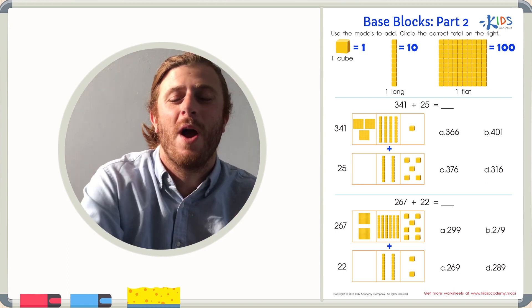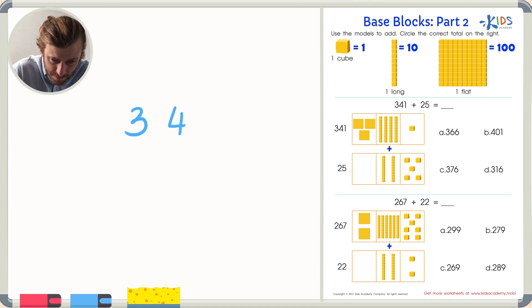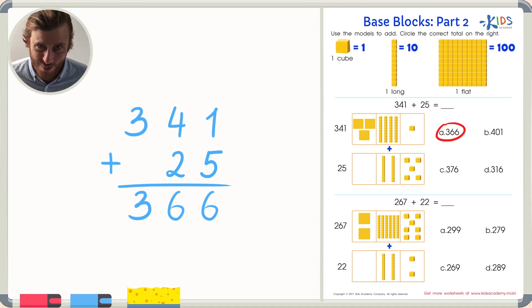We could check it even one more way if we want to just be safe. We can line our problem up vertically the way it's written and add place by place. This is called the standard algorithm. And this is the way that most kids learn in school. First, we'll add the ones place, one plus five. We just count five plus one. One, two, three, four, five, and six. Then we have four plus two. Four plus two is six. And finally, we have three plus nothing. We know three plus nothing is just three, leaving us with 366 for a third time. Okay, we get it. The answer is 366. Let's try the next problem.